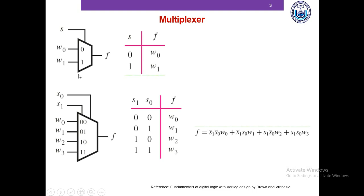The truth table of a 2-to-1 multiplexer is shown here. When the selector is 0, the output F is equal to W0, and when the selector is 1, the output F becomes equal to W1. Similarly, for a 4-to-1 multiplexer, we use the selectors to select one of the 4 data inputs that will be transmitted to the output F.